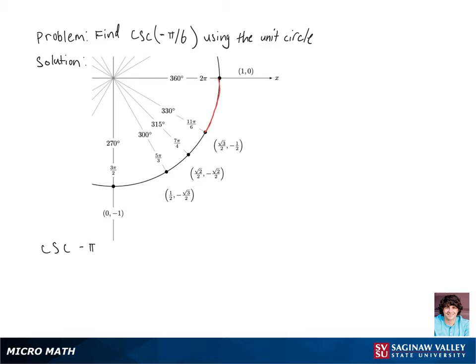Cosecant is just 1 over sine, so cosecant of negative pi over 6 is just going to be 1 over negative 1 half. Dividing by fractions is the same as multiplying by its reciprocal, so our final answer is negative 2.